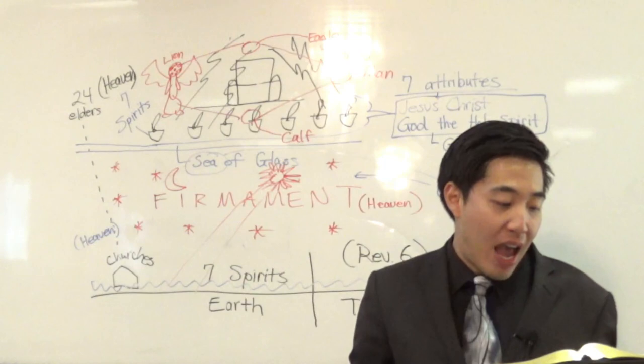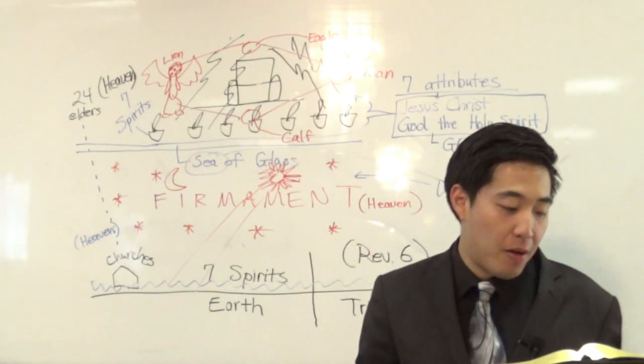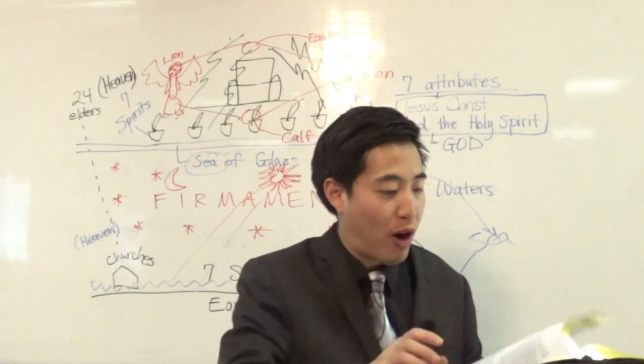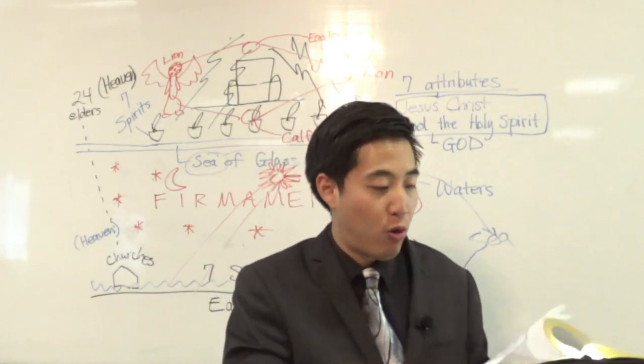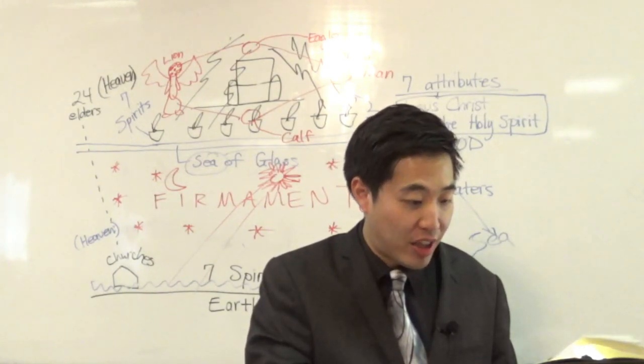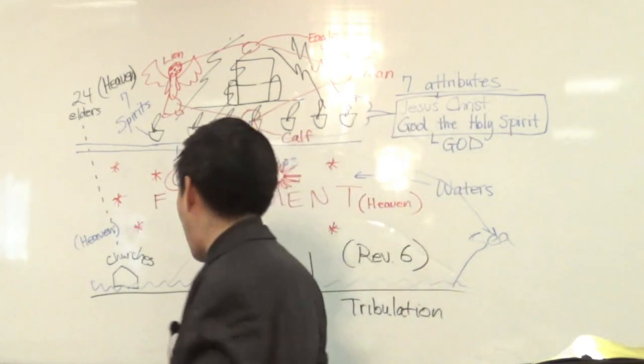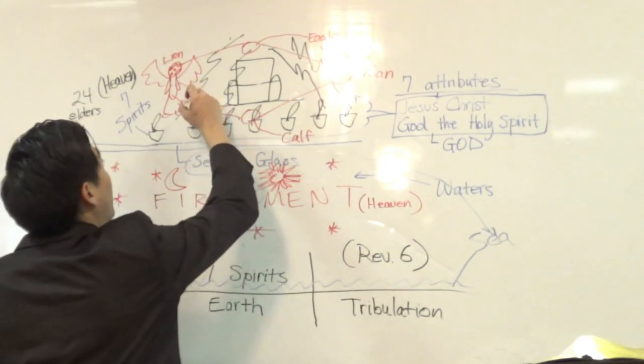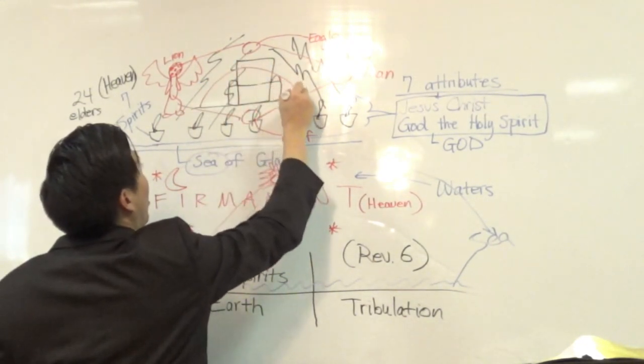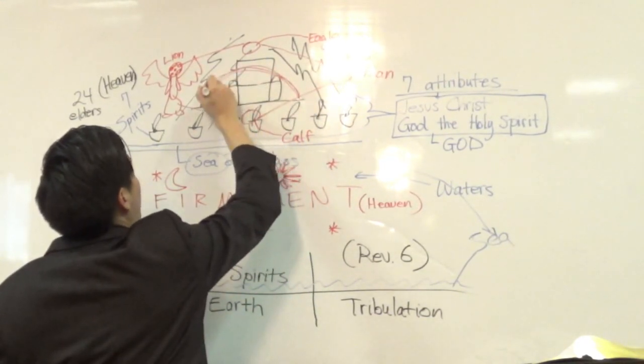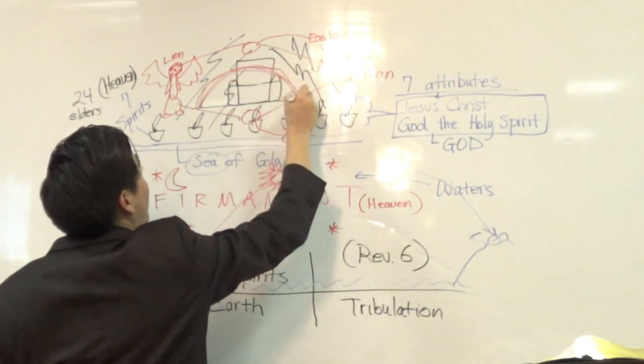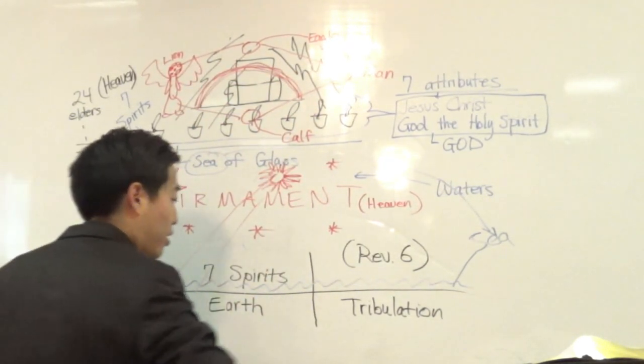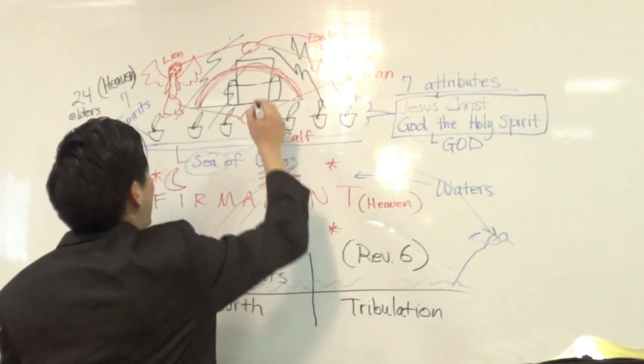But look at verse 28. As the appearance of the bow that is in the cloud. Wait, that matches with Revelation 4, right? Which we read earlier. Chapter 4, was it verse 3? Let's take a look at that one. Yeah, chapter 4, verse 3, there's a rainbow round about that throne. I told you so. Look at right here, man. Wow, that's something. See, there is no doubt. Are you convinced by now this is the same thing? Yeah, this is undoubtedly the same thing.